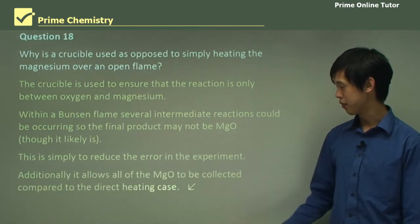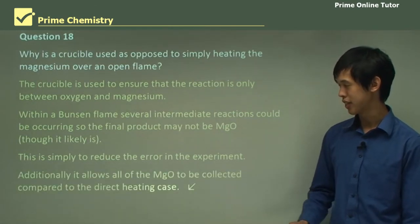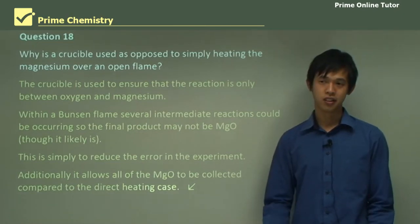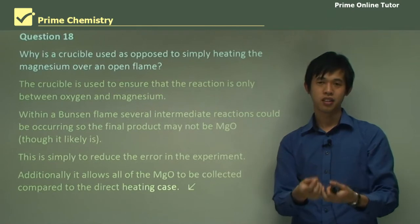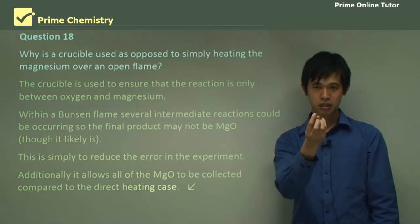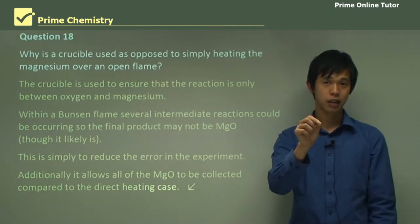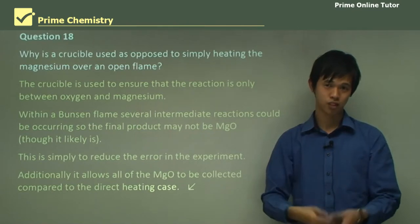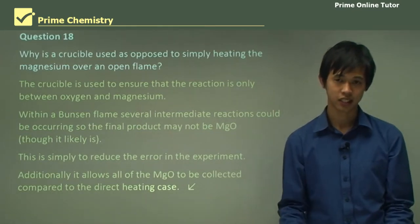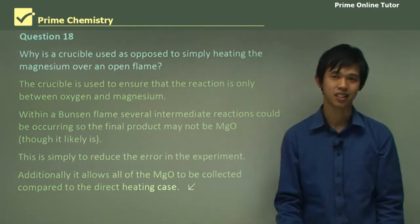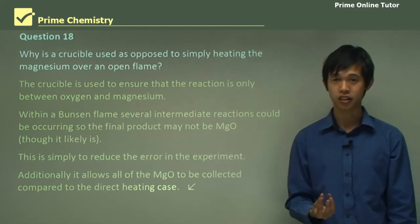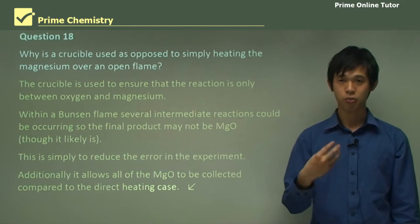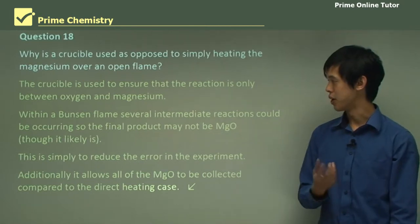Additionally, it allows all of the MgO to be collected compared to the direct heating case. So if you've got a crucible and the magnesium's inside it and it becomes a powder, you've at least captured the powder. Whereas if you put the magnesium in the flame and the powder appears, it could go everywhere, and you can't collect it. Keep in mind the crucible is also chemically inert because it's a ceramic, so it won't react with the magnesium.